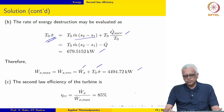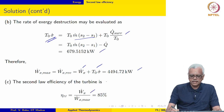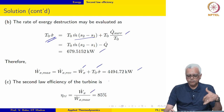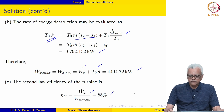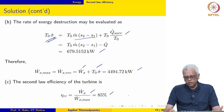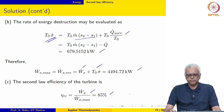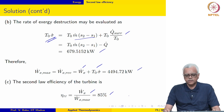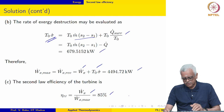Since this is a power producing device, the second law efficiency is simply W_x dot actual divided by W_x dot maximum. The second law efficiency of the turbine comes out to be approximately 85 percent, which is quite high but typical of turbines.